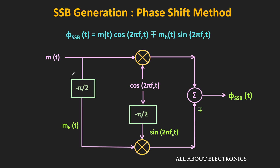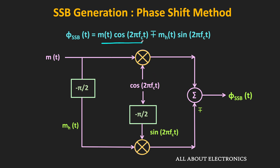The input to the first Hilbert transform block is the message signal, and the output is mh(t). Similarly, the input to the second Hilbert transform block is the carrier signal, which can be generated locally. This block provides a –π/2 phase shift, and at the output we get sin(2πfct). The first balanced modulator multiplies m(t) and cos(2πfct), giving the first term, while the second balanced modulator takes mh(t) and sin(2πfct), giving the second term.